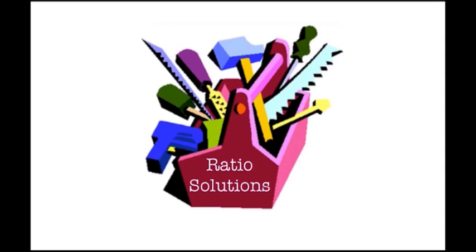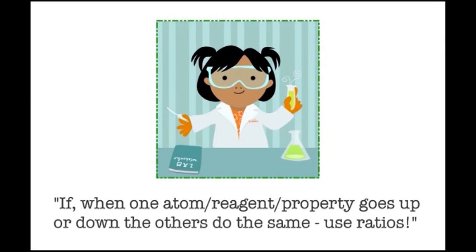Hopefully this has given you some extra skills in your chemistry toolkit. When you realize you're dealing with a ratio problem - in other words, if when one atom or reagent or property goes up or down, the others do the same - use ratios. Good luck.